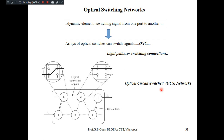In optical circuit switched networks, the main requirement is that the path must be fully established between the source and destination before transmitting the message. The path remains established until the information reaches the destination and an acknowledgement is received, after which the established path can be removed. This is the normal procedure adopted in optical circuit switched networks.